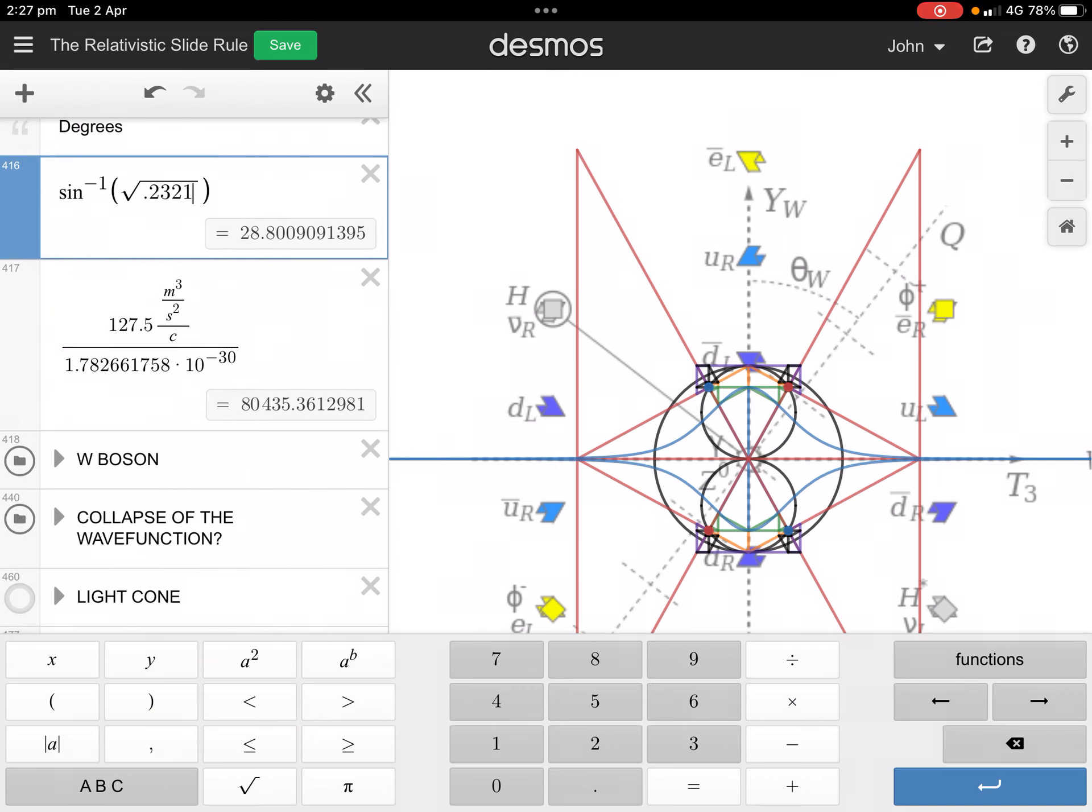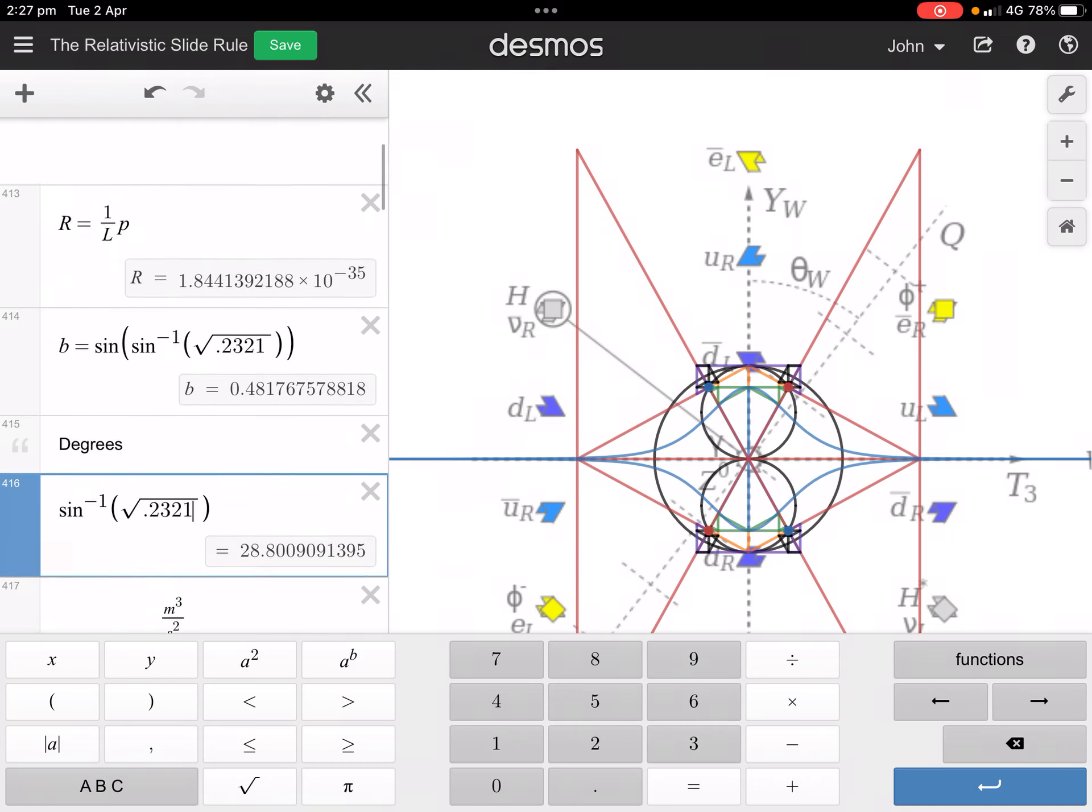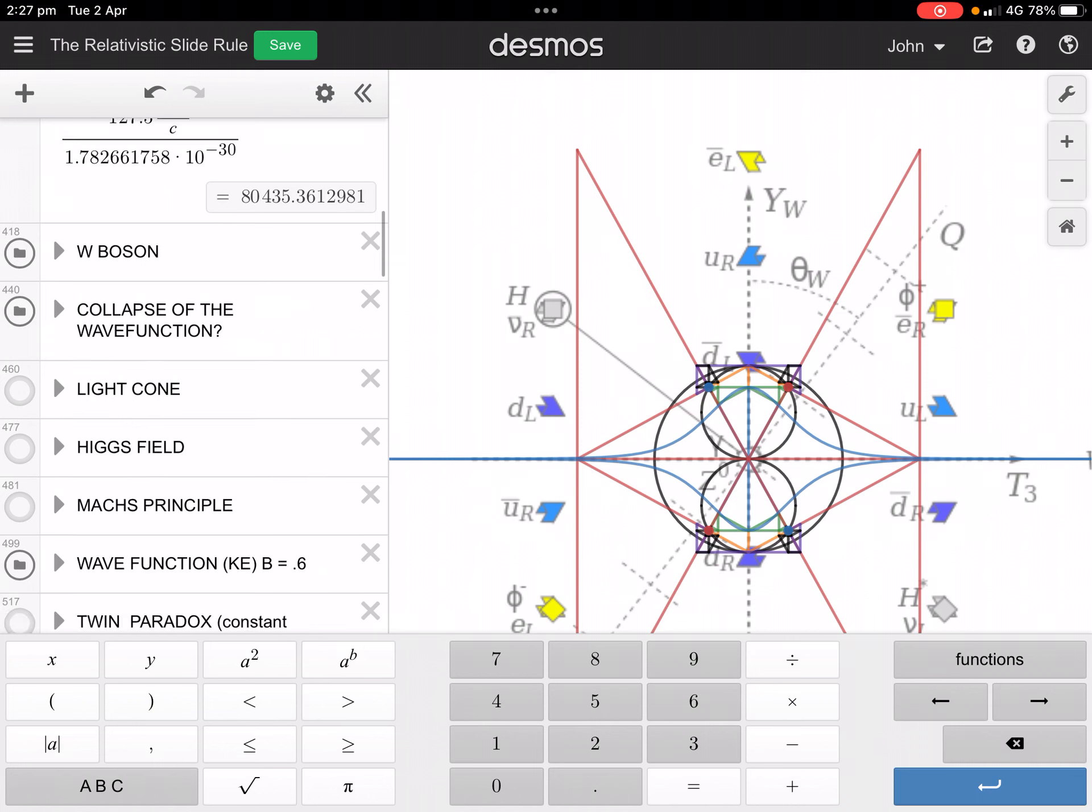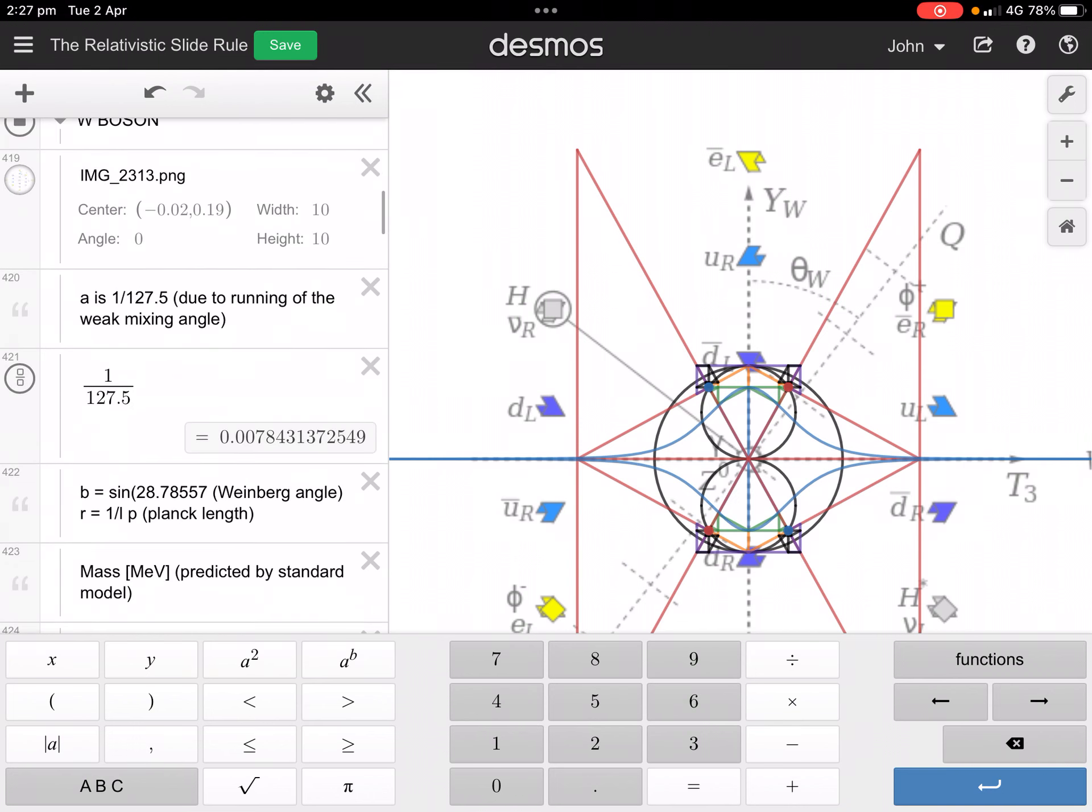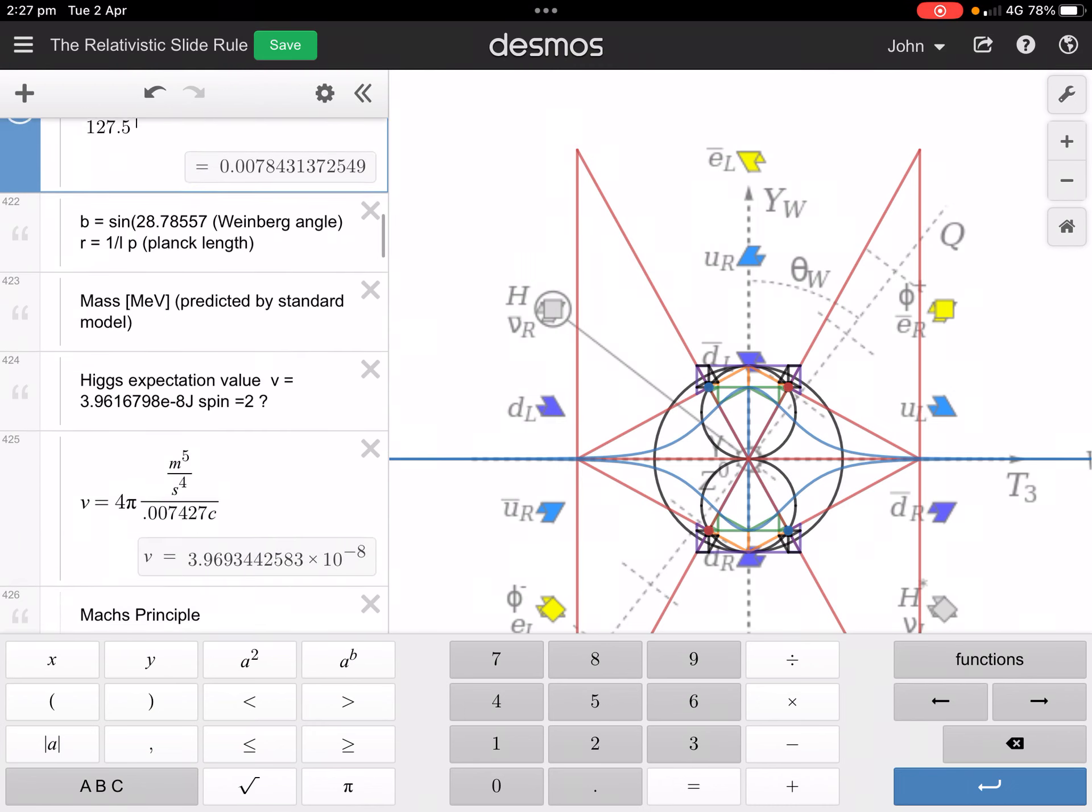And yeah, before I had a problem because I didn't realize that the fine structure constant was increasing at higher energies. I thought it was just a constant, but now that I know that it increases to about 0.00784 instead of the usual 0.0073, then yeah, I get exactly the right answer, spot on.